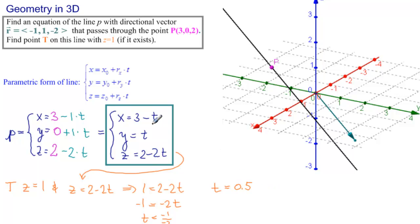And now we substitute in to get our point. This means that x equals 3 minus 0.5, equal to 2.5, and y equals t, so that's 0.5.